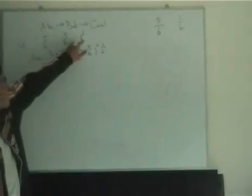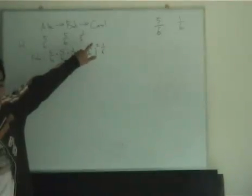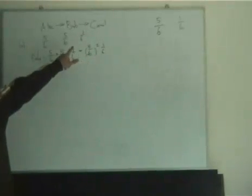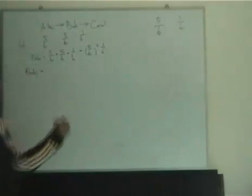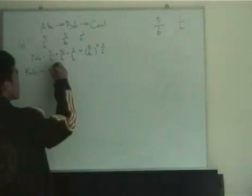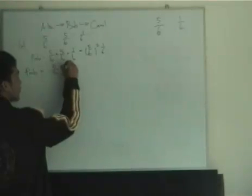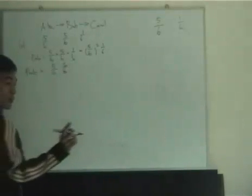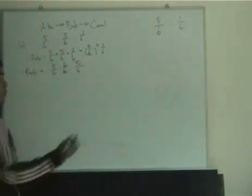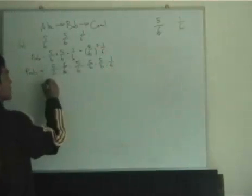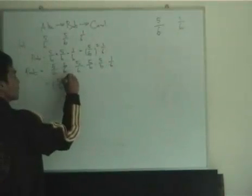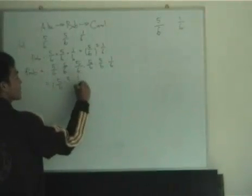For Carol to get a six on her second turn, all three players must first get non-sixes in the first round — each with probability 5/6 — and then Alice and Bob must again get non-sixes before Carol throws a six. So the probability for Carol getting a six on her second throw is (5/6)⁵ × (1/6).